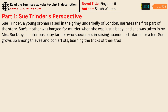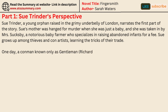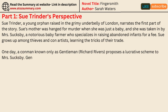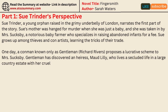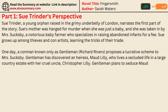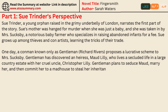One day, a con man known only as Gentleman, Richard Rivers, proposes a lucrative scheme to Mrs. Sucksby. Gentleman has discovered an heiress, Maude Lilly, who lives a secluded life in a large country estate with her cruel uncle, Christopher Lilly. Gentleman plans to seduce Maude, marry her, and then commit her to a madhouse to steal her inheritance. He wants Sue to be Maude's maid and help convince her to marry him.